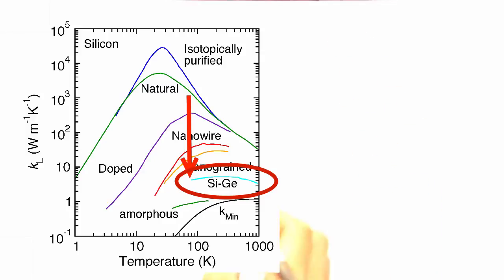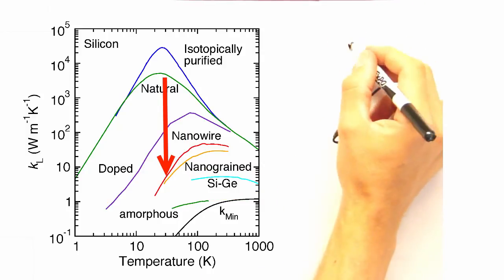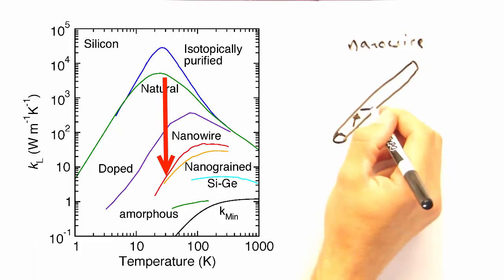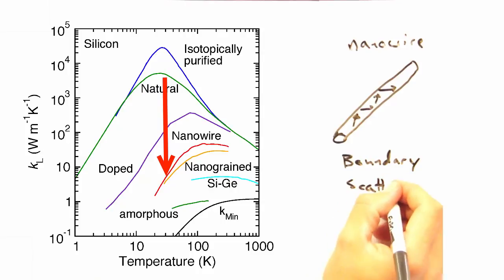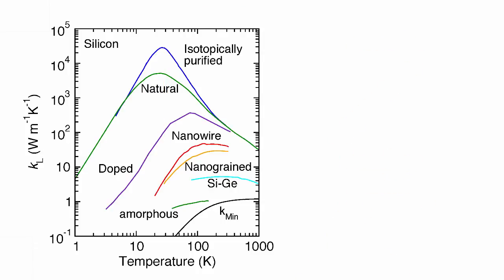Now let's look at nanowires, which let's say have a diameter of 10 to 50 nanometers. Why is the thermal conductivity so low for them? Well, for the nanowire, the boundaries are closer together, and so we'd have more scattering. Good.